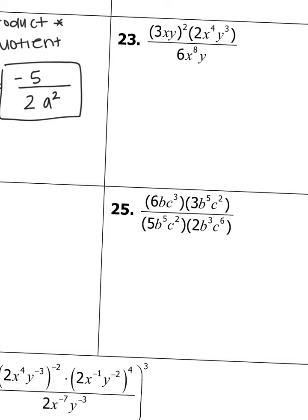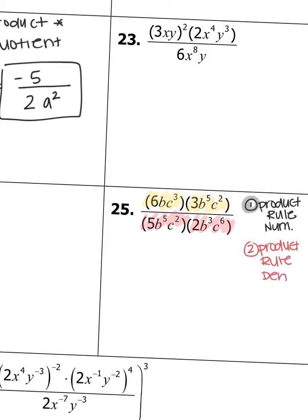Try number 25 now — it's very similar. First use the product rule on the top: multiply the numerator. Then use the product rule in the denominator. Your last step is to divide and use the quotient rule. Make sure your answer does not contain any negative exponents.